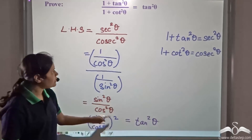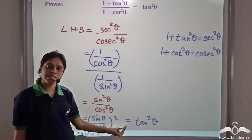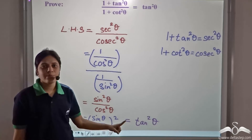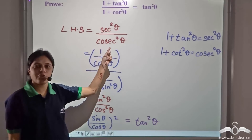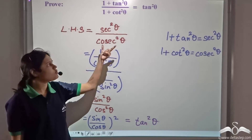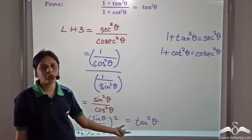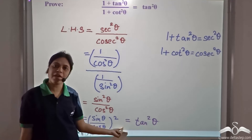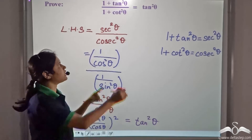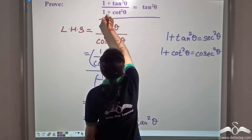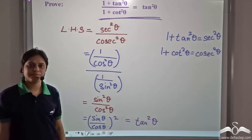Also note that this is yet another identity because we have proved it for a general value of θ. This is true for any θ because we have not assumed any value of θ for proving this. So even this is an identity.